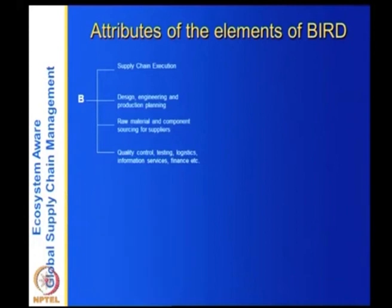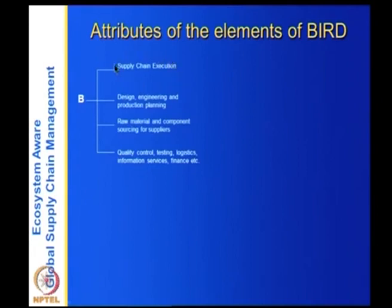Looking at B — the business or service chain — it includes design, engineering and production planning; raw material and component sourcing from suppliers and quality control testing; logistics; information services and finance; and finally supply chain execution. These are all the business functions of the service chain.